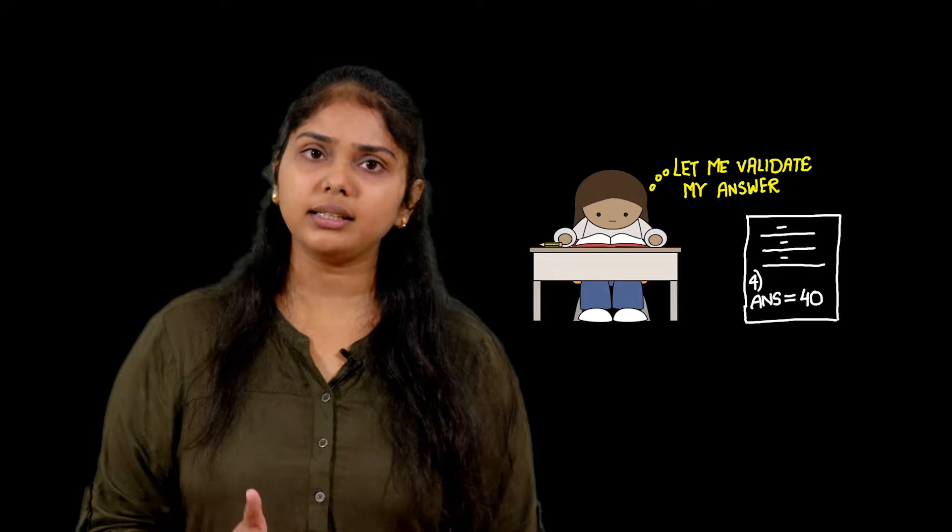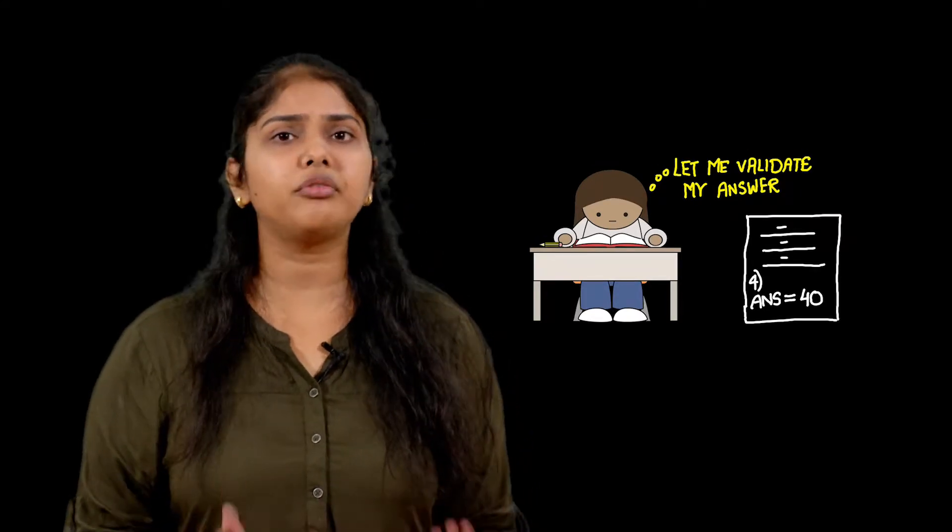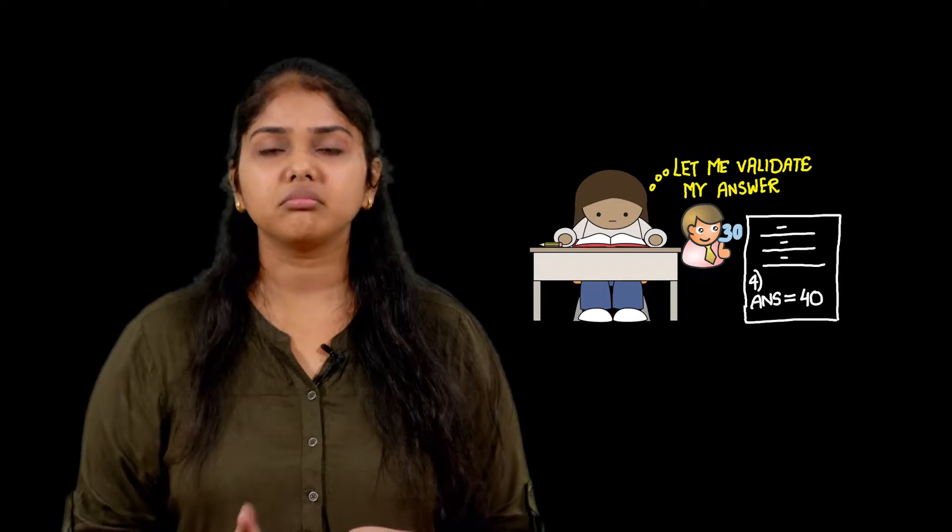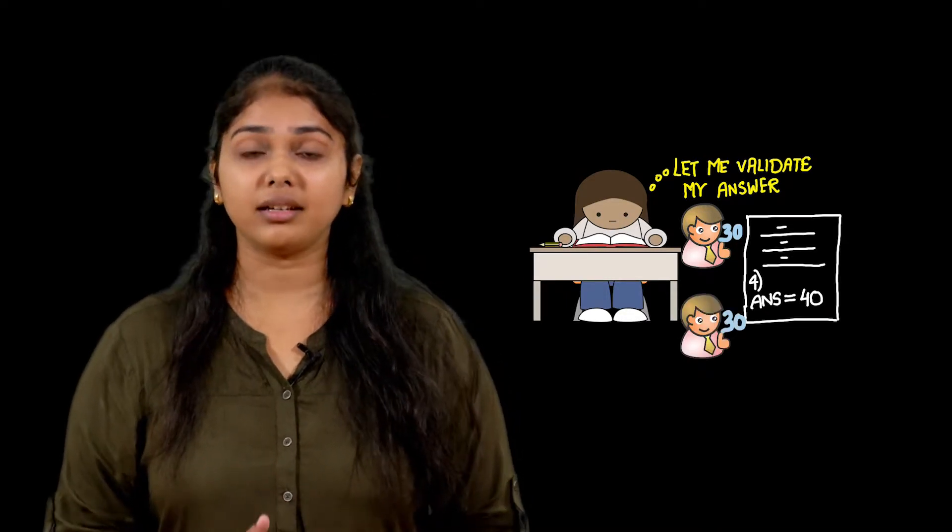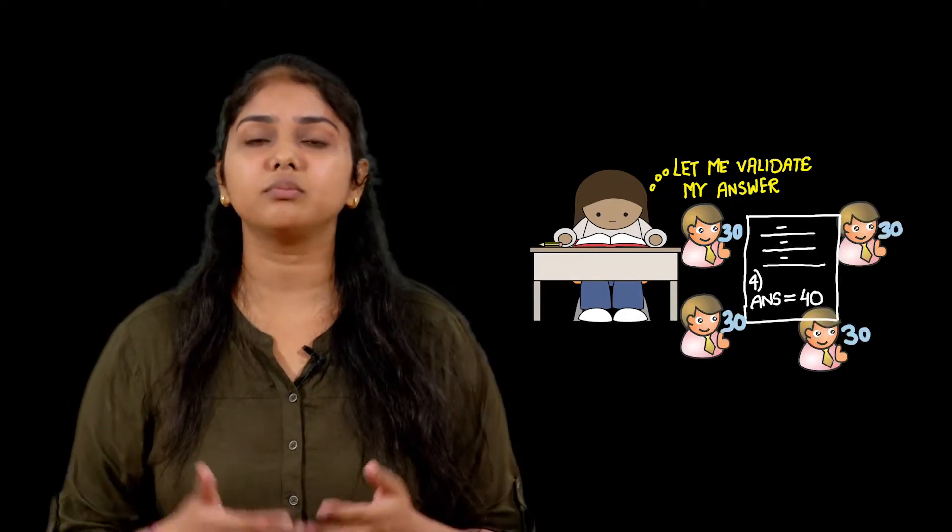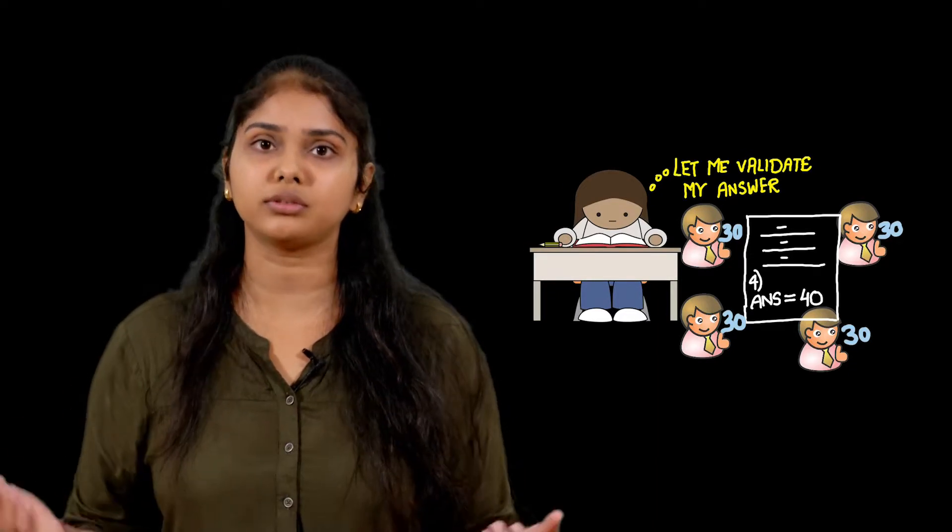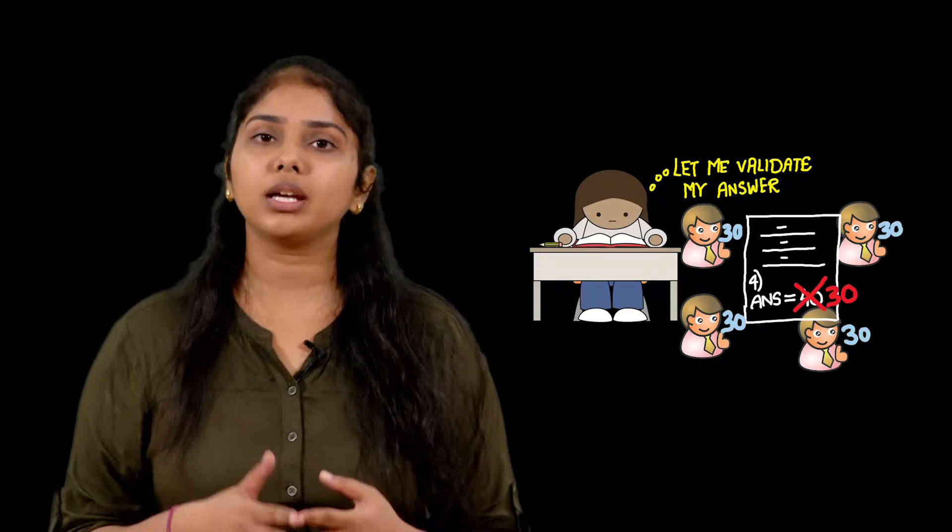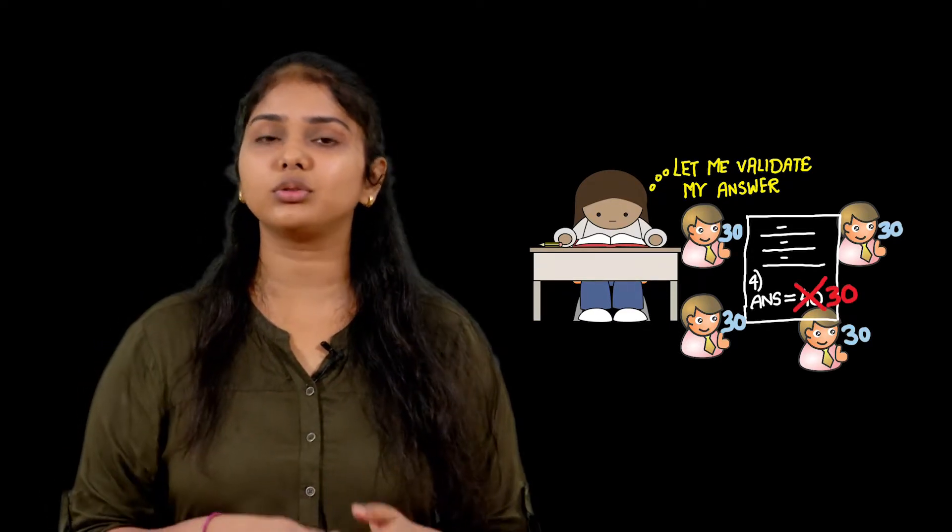Then when you go about to validate the answer to this question, your first friend says no, my answer is 30. You go to your second friend, he says no, my answer is 30. Third friend 30, fourth friend 30, so on and so forth. Then mostly a time will come where you will cut off that 40 on your sheet and write a 30 there.